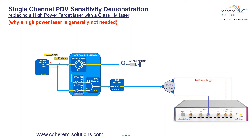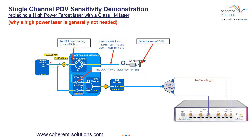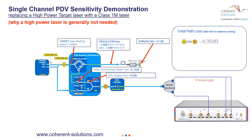Let's look at the setup and understand where some of the losses are for both the target laser and the reference laser. Going from point A to point C, you have losses going through the circulator twice after it reflects, through the inline power meter and attenuator, and then a little bit through the coupler. If you add up all those losses, those give you approximately 4.35 dB of loss all the way from point A to point C.